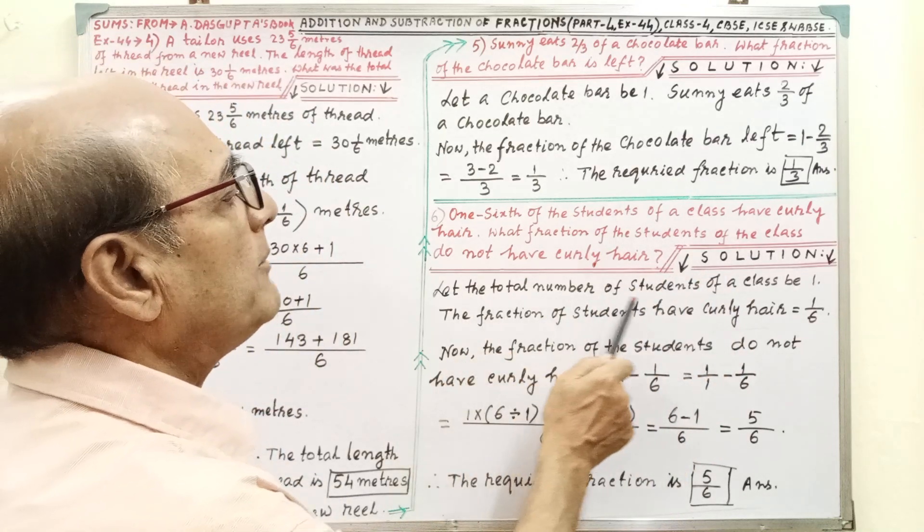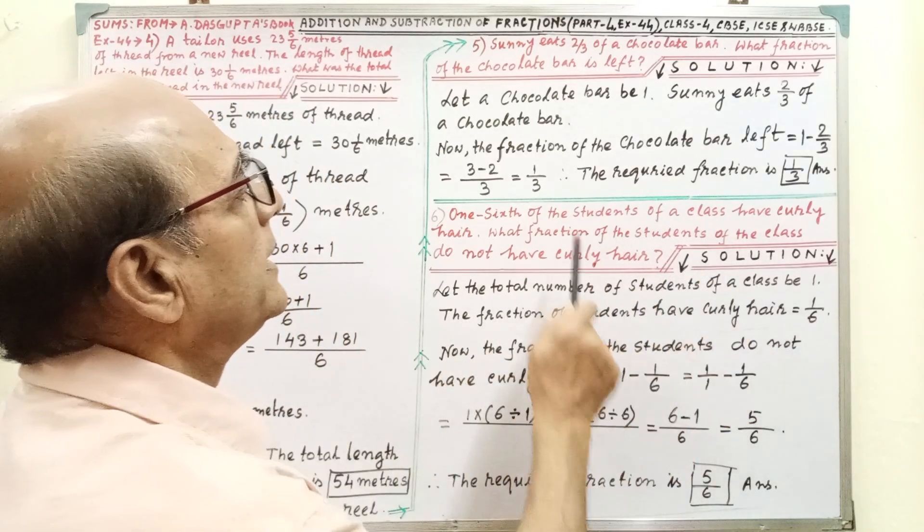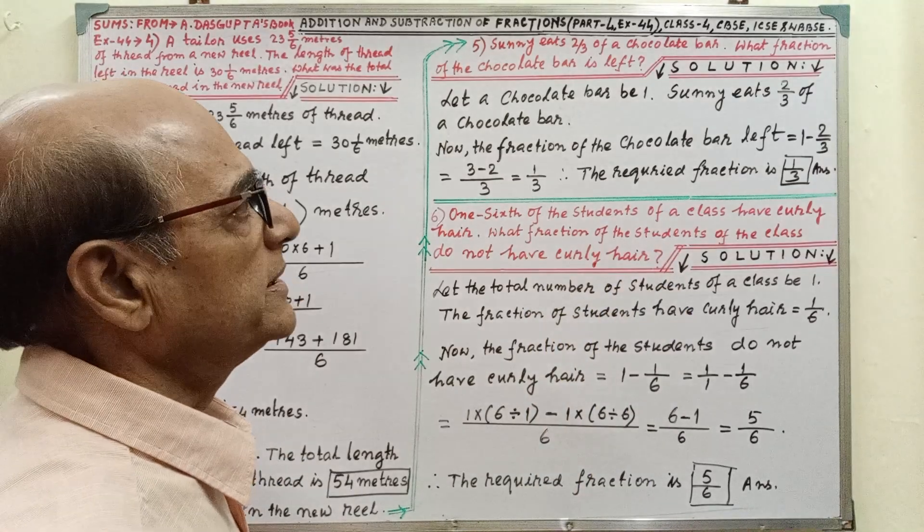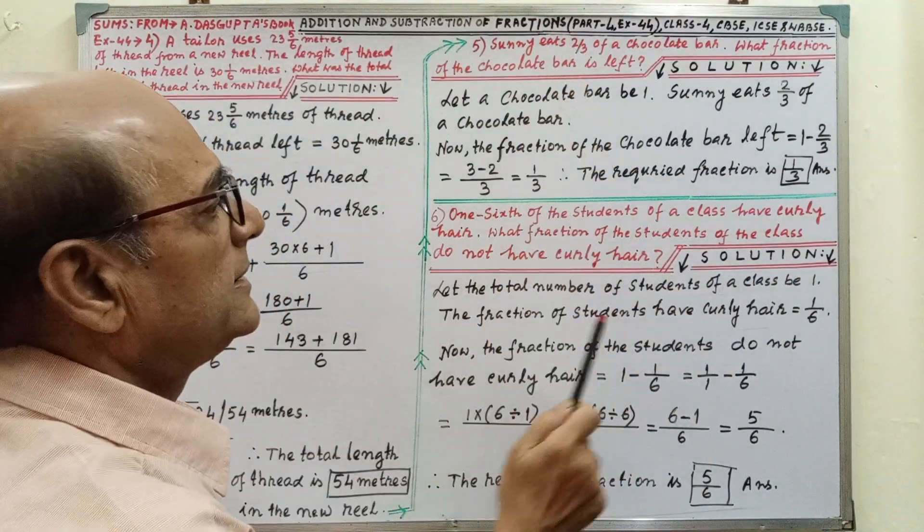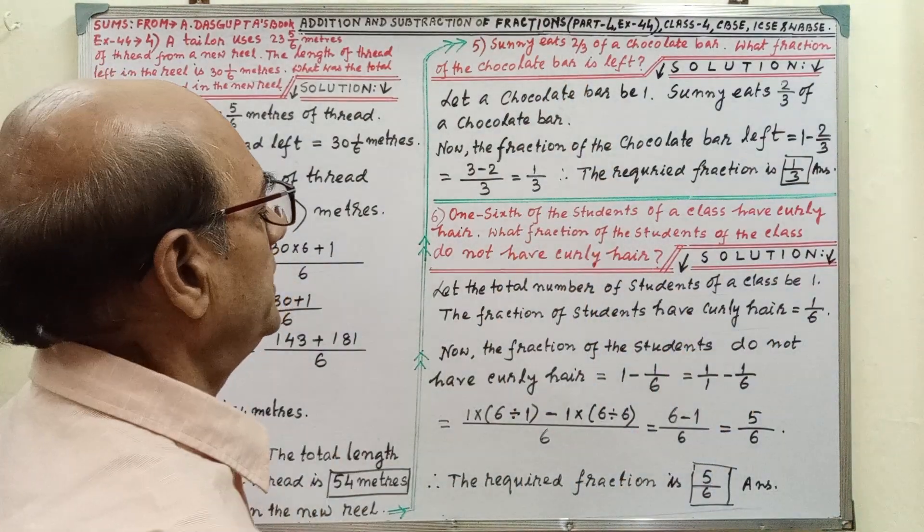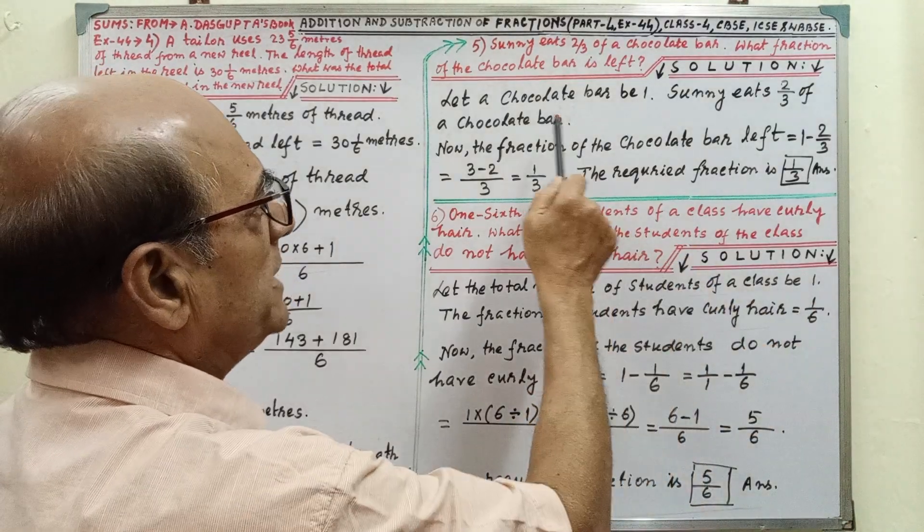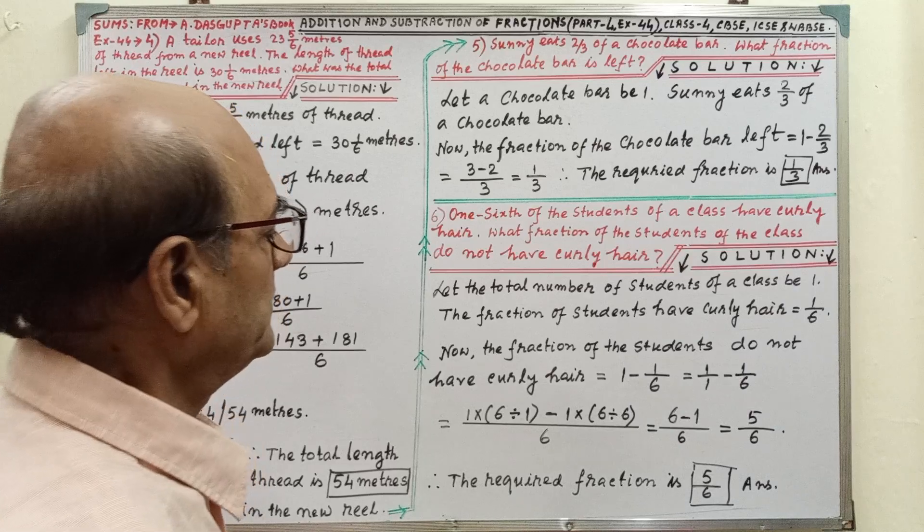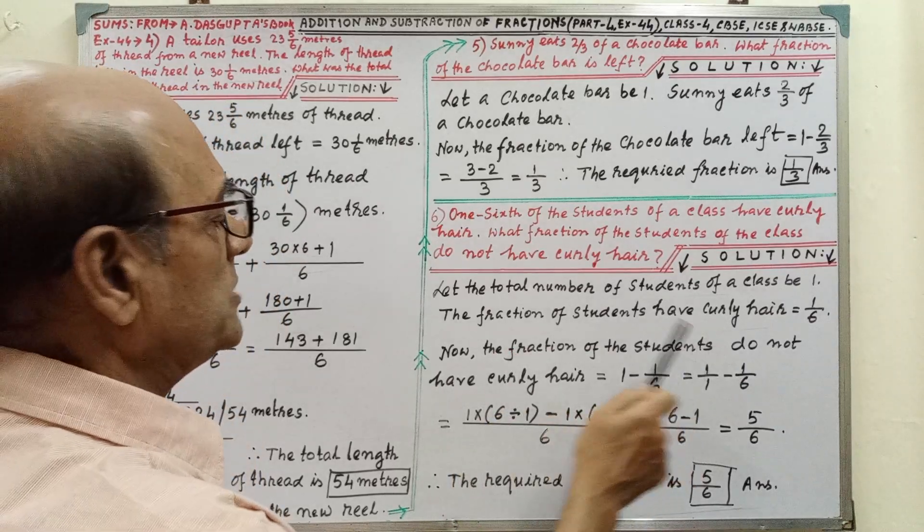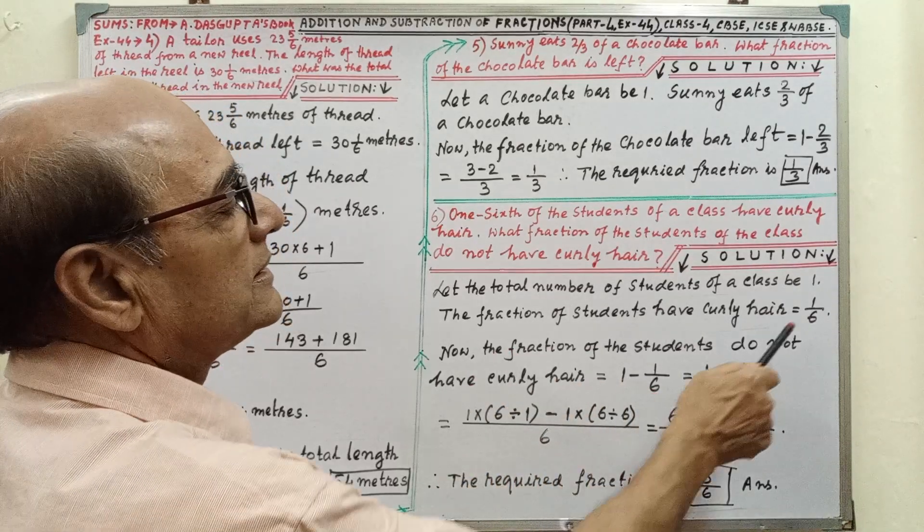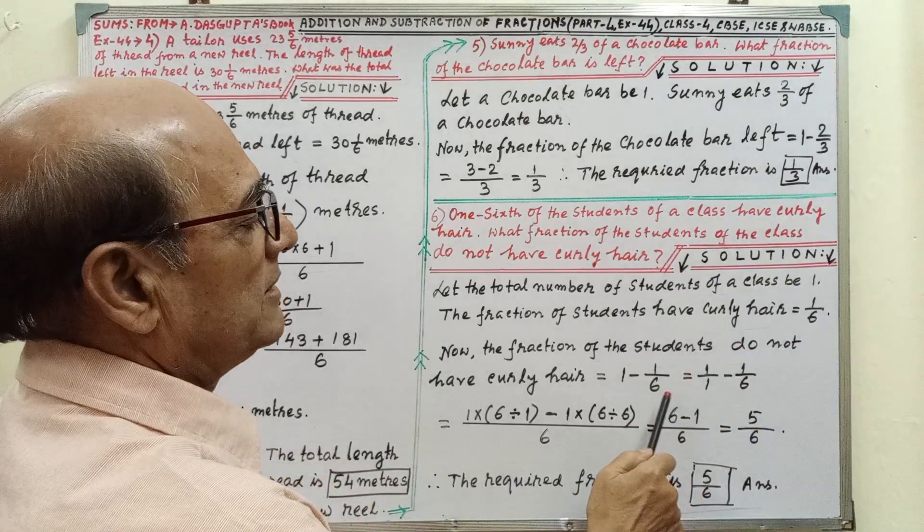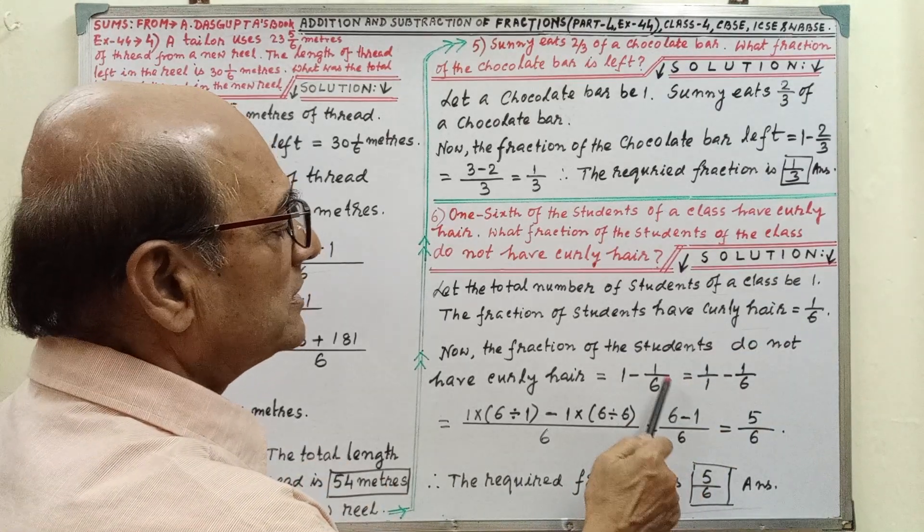Solution. Let the total number of students of the class be 1. Here, total number of students is not given. This is why we have considered 1. The fraction of students have curly hair, that is 1 by 6. That is given in our problem. Now, the fraction of the students do not have curly hair: total minus number of curly hairs.